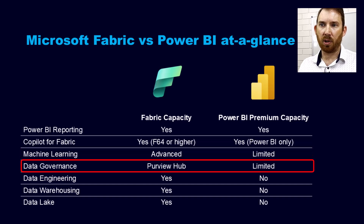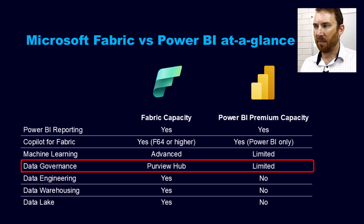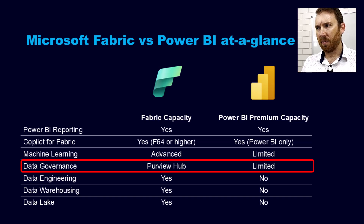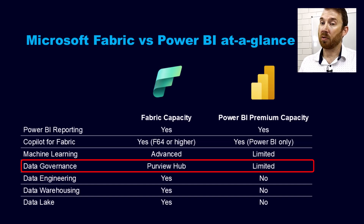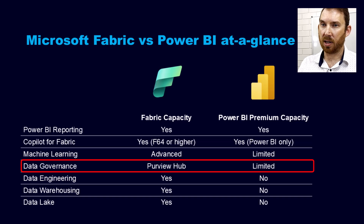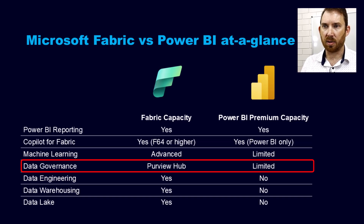Now, in terms of data governance, this is a really, really important topic. Every organization should be thinking about data governance. It was very limited with Power BI premium capacity. Power BI in general allows you to try and do some very rudimentary understanding of where your data is. But the Purview hub that comes bundled with Fabric provides a much richer experience to see how your data flows between the objects inside the ecosystem. And of course, you can then upgrade to full Purview for even better data governance capabilities.